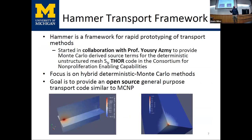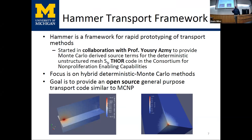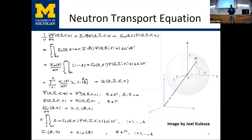HAMMER is our C++ codebase that our team developed, starting with Professor Azmy. The name comes from the connection with his work — Thor has a hammer. What we did is provide Monte Carlo results for use in a collided source approach to mitigate numerical artifacts in deterministic transport called ray effects. Our main focus is on hybrid deterministic Monte Carlo, and our goal is to provide an open-source general-purpose transport capability.